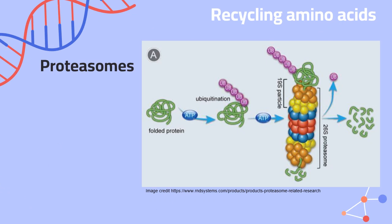That insulin we just made — I don't necessarily want it to continue regulating my blood sugar forever. What if I need to raise my blood sugar? I don't want insulin continuing to lower it. So we have proteasomes that help us digest and break down proteins in our cells. We can then recycle those amino acids and use them to build new proteins in another round of translation. Proteasomes also break down proteins that are denatured or otherwise falling apart. The protein winds its way down the tube that is the proteasome, gets chopped into peptides, and then those peptides are broken down into individual amino acids — which, because we are amazing recycling centers, get reused to build new proteins.